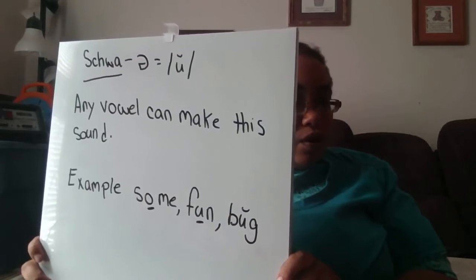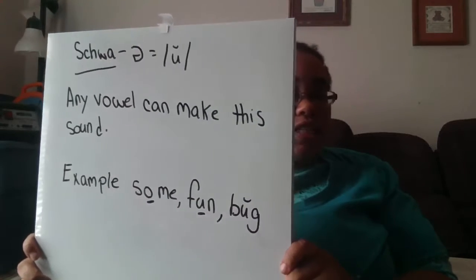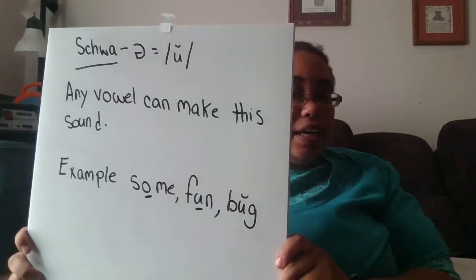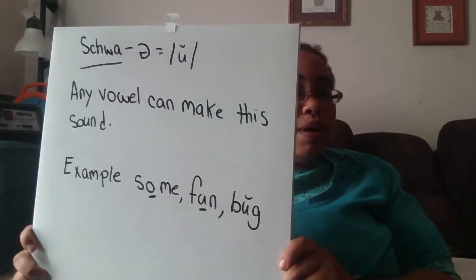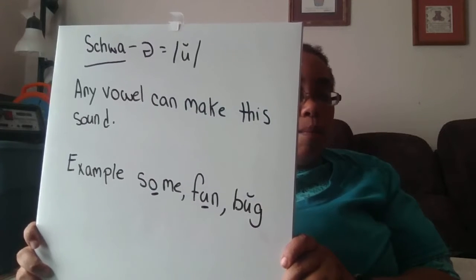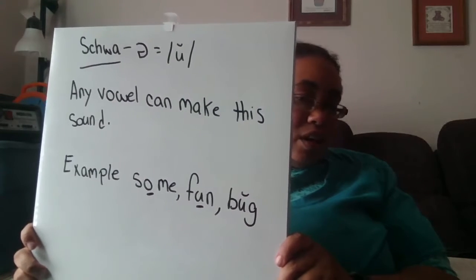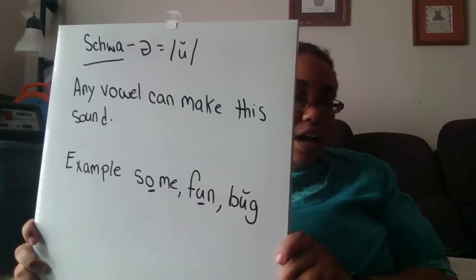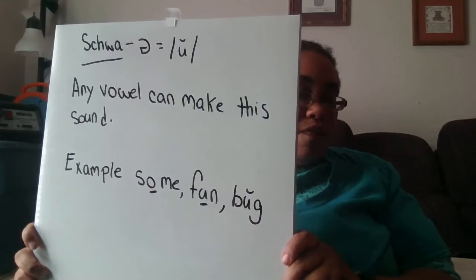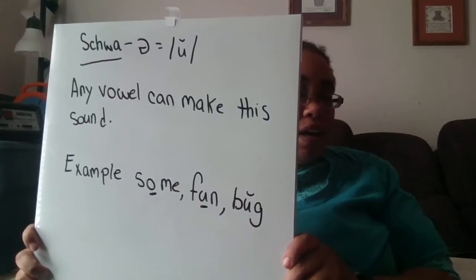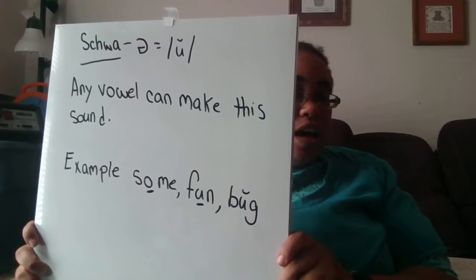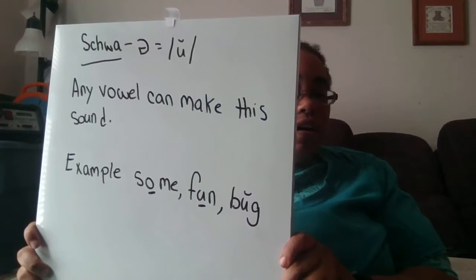Let's look at some words. The first word is 'some' — S, O, M, E — and in this word our O is going to make the schwa sound, so 'uh,' some. Our second word is 'fun' — F, U, N. In this word the short vowel U makes the 'uh' sound, which is our schwa. Fun.